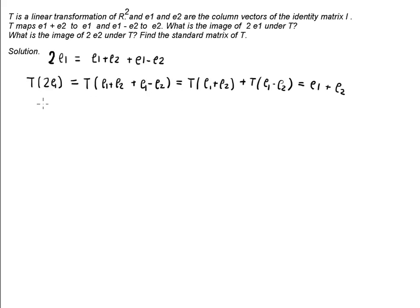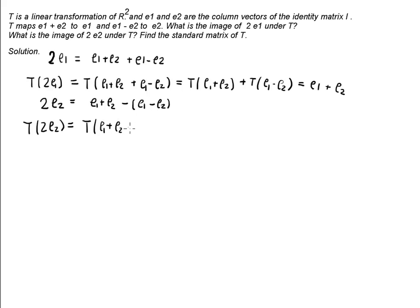By the same reasoning, twice E2 is simply (E1 plus E2) minus (E1 minus E2). So the image of 2E2 equals T(E1+E2) minus T(E1-E2), which gives us E1 minus E2.